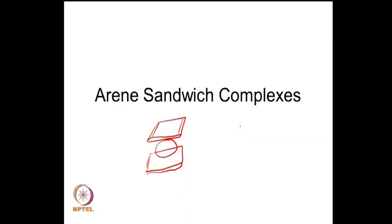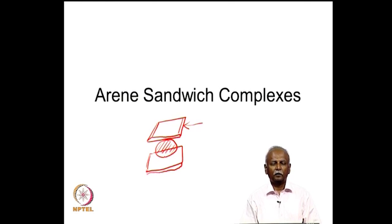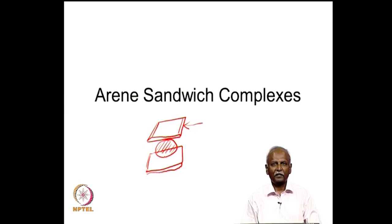In this lecture, we will discuss arene sandwich complexes. The analogy to a sandwich is because an arene ring or a cyclic pi system is a flat object. Between two flat objects you have a metal atom which is sandwiched. We call this a sandwich complex, and one often encounters cyclopentadienyl sandwich complexes. The next, probably the most common sandwich complex, is the arene complex, where you have a benzene or a benzenoid ring which is sandwiching a metal atom.